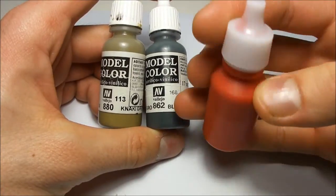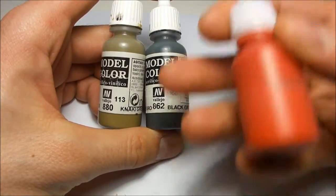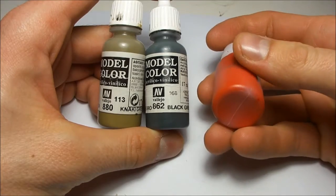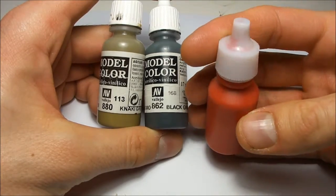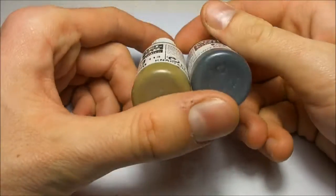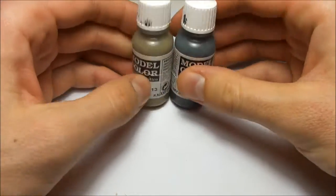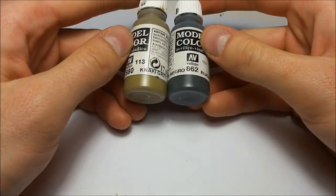If you start adding some grey, then you will take out some of the color, you will desaturate the color. So yeah, I started with a 50/50 mix of these two, and then after I did a base coat, I do the shading.